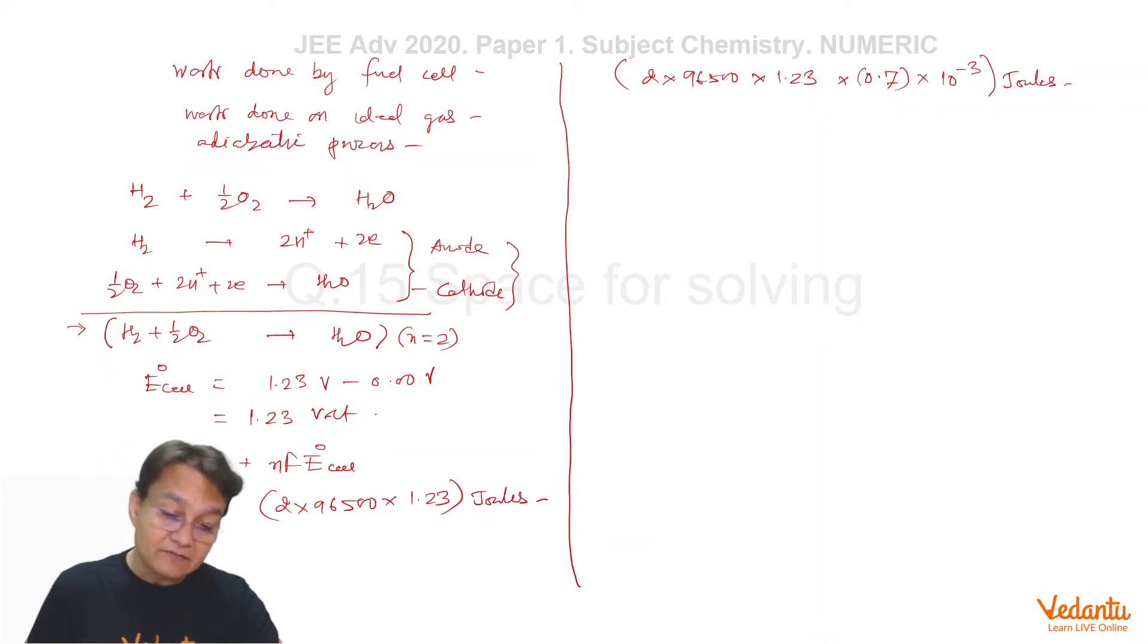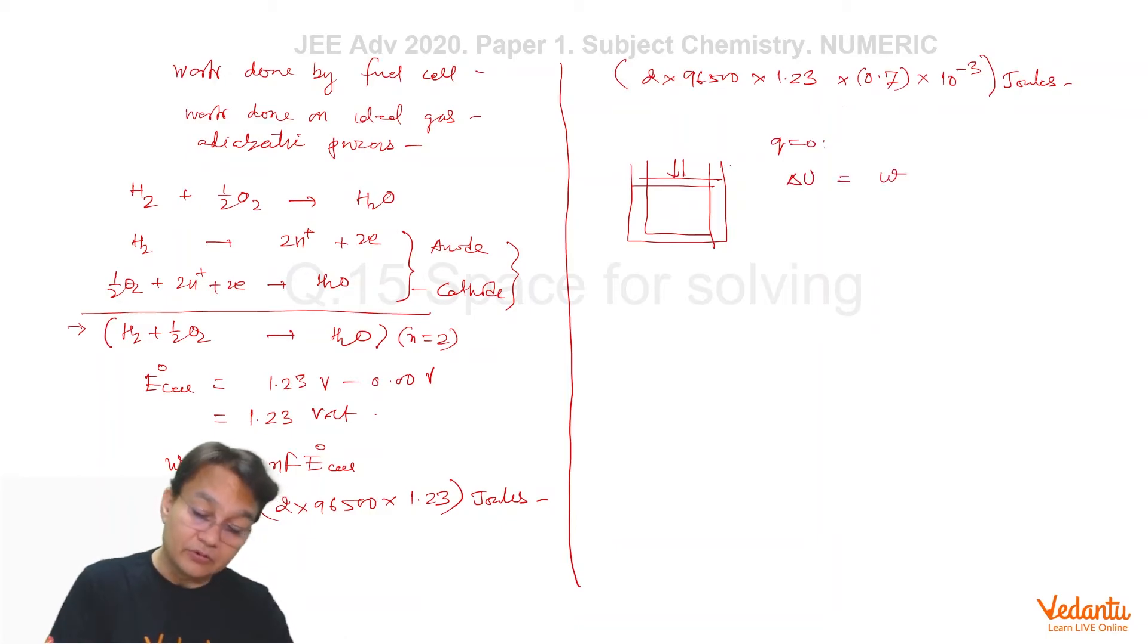And now this work we are going to do on an ideal gas in an adiabatic vessel. We are going to compress this ideal gas in an adiabatic vessel by this work. And in the process, since q is going to be 0, delta U will be equal to work. And we know that for ideal gas, delta U is always equals to nCv into delta T.